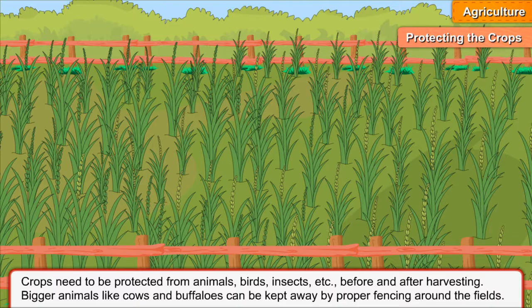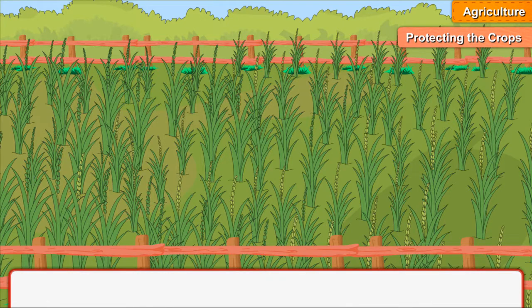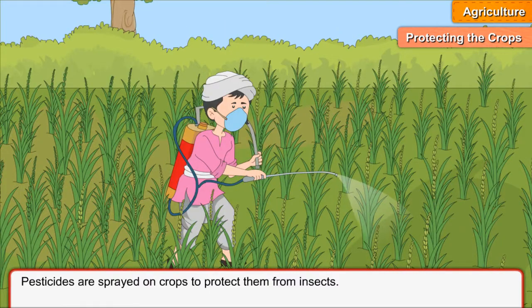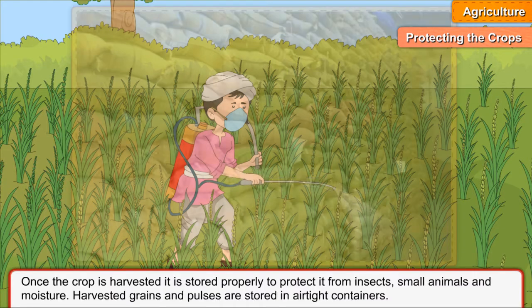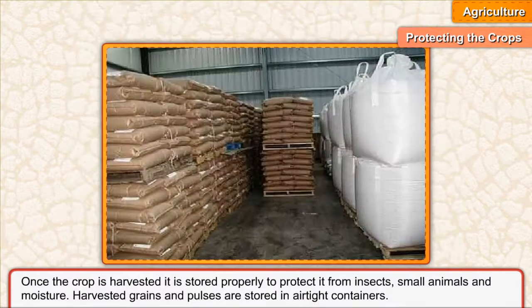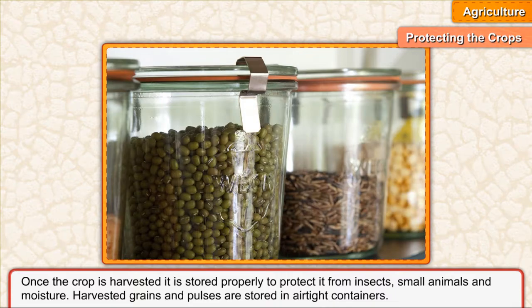Bigger animals like cows and buffaloes can be kept away by proper fencing around the fields. Scarecrows help to keep the birds away. Pesticides are sprayed on crops to protect them from insects. Once the crop is harvested, it is stored properly to protect it from insects, small animals, and moisture. Harvested grains and pulses are stored in airtight containers.